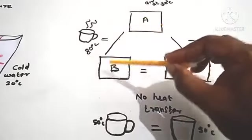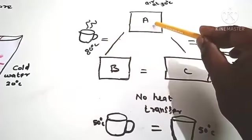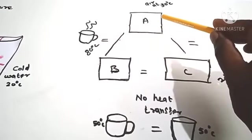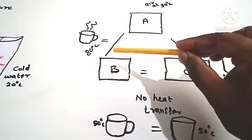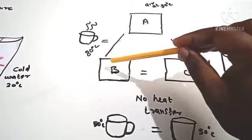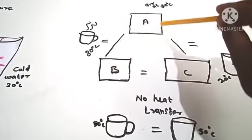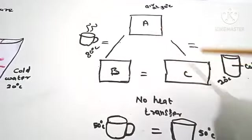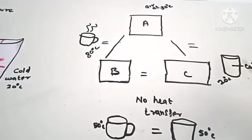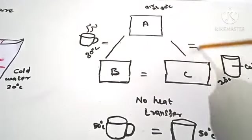Consider system A and system B — they are at the same temperature. The hot coffee is the hotter body, and the air at room temperature is 30 degrees Celsius. Heat is transferred from the hotter body, hot coffee, to the colder body. Considering A and C, the air is at room temperature while the cold coffee is at a lower temperature, and heat is transferred between system A and C.